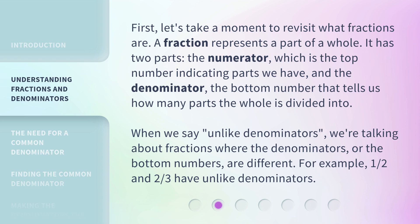When we say unlike denominators, we're talking about fractions where the denominators, or the bottom numbers, are different. For example, one-half and two-thirds have unlike denominators.